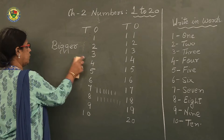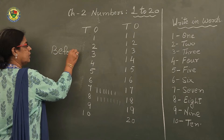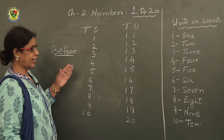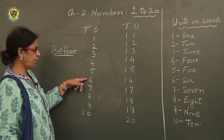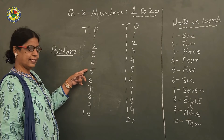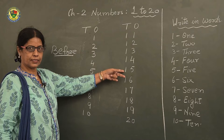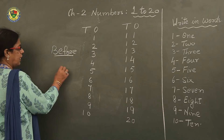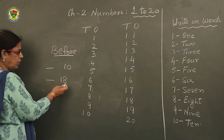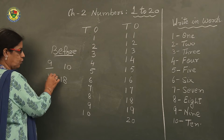Same way I want to explain before and after numbers. Now before number — I have written this to explain you clearly. Before 6, which number is there? You will see up — 5 is there. So 5 is before 6. Before 10, 9 is there. Before 16, 15 is there. And if I write 18 — before 18 is 17, you can see here.